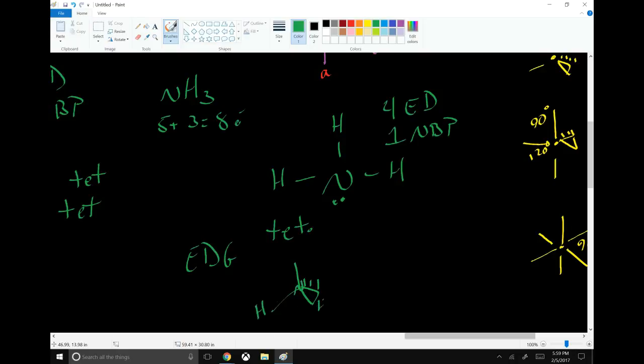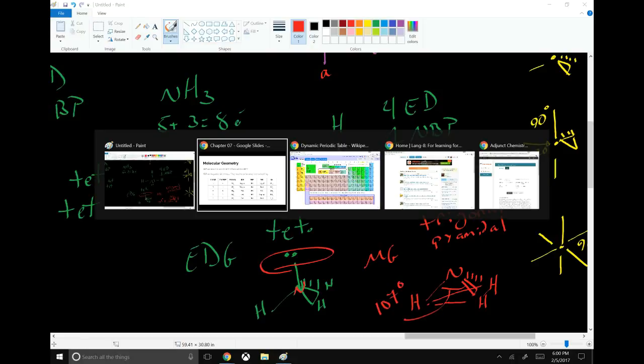Which means our electron domain geometry is tetrahedral. So here we have nitrogen in the middle. Hydrogen, hydrogen, hydrogen. And then up here, our non-bonding pair. But our molecular geometry, after this non-bonding pair disappears, looks like this. Our three hydrogens are still pushed down because that non-bonding pair is still there. And this is called trigonal pyramidal. It is no longer tetrahedral. It is just a trigonal pyramid. Because you put in lines down here at the bottom. And you've got a pyramid with a triangular bottom. You squashed the tetrahedron. And remember, the non-bonding pair takes up more space. So the bond angles have changed. Instead of being 109.5, they're 107 degrees.